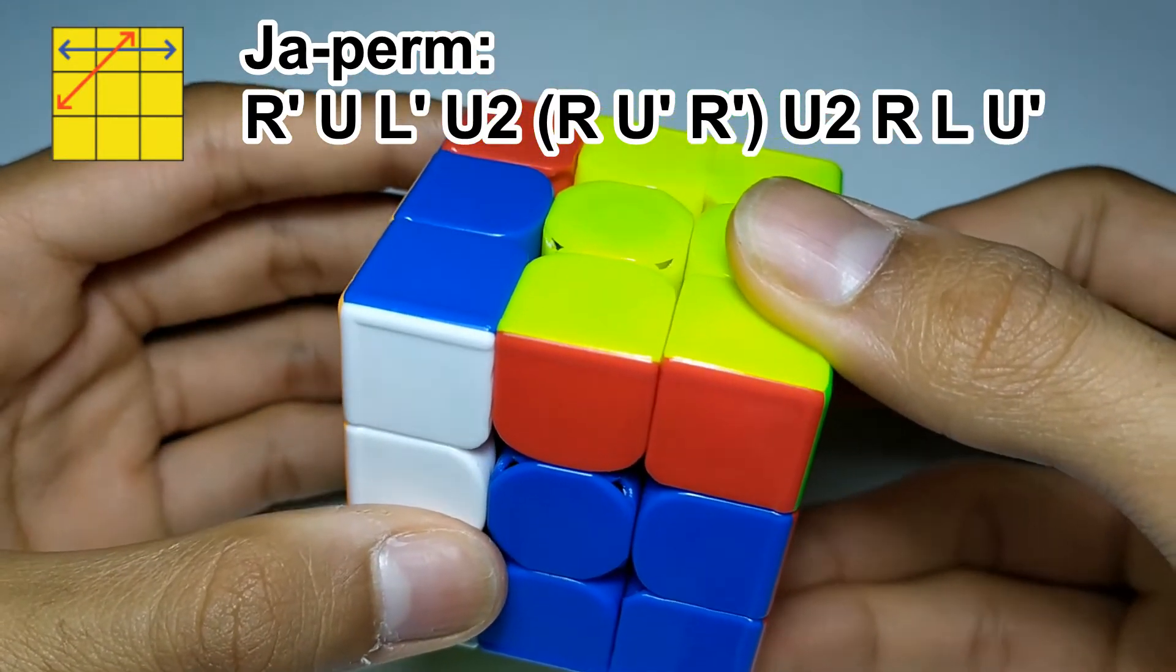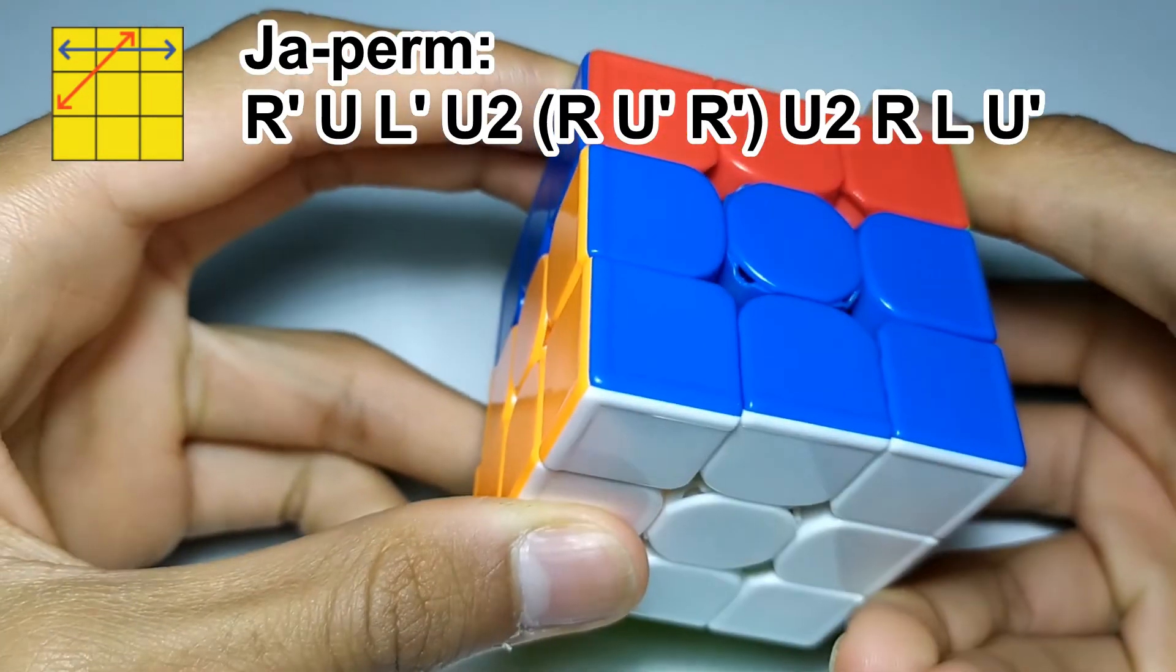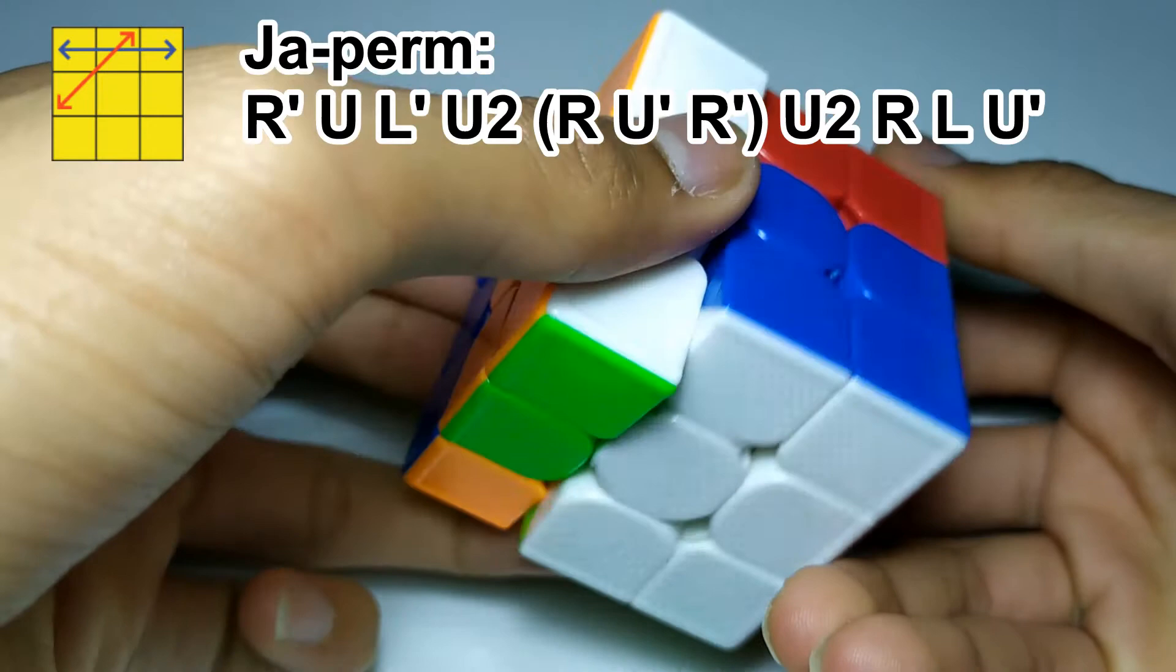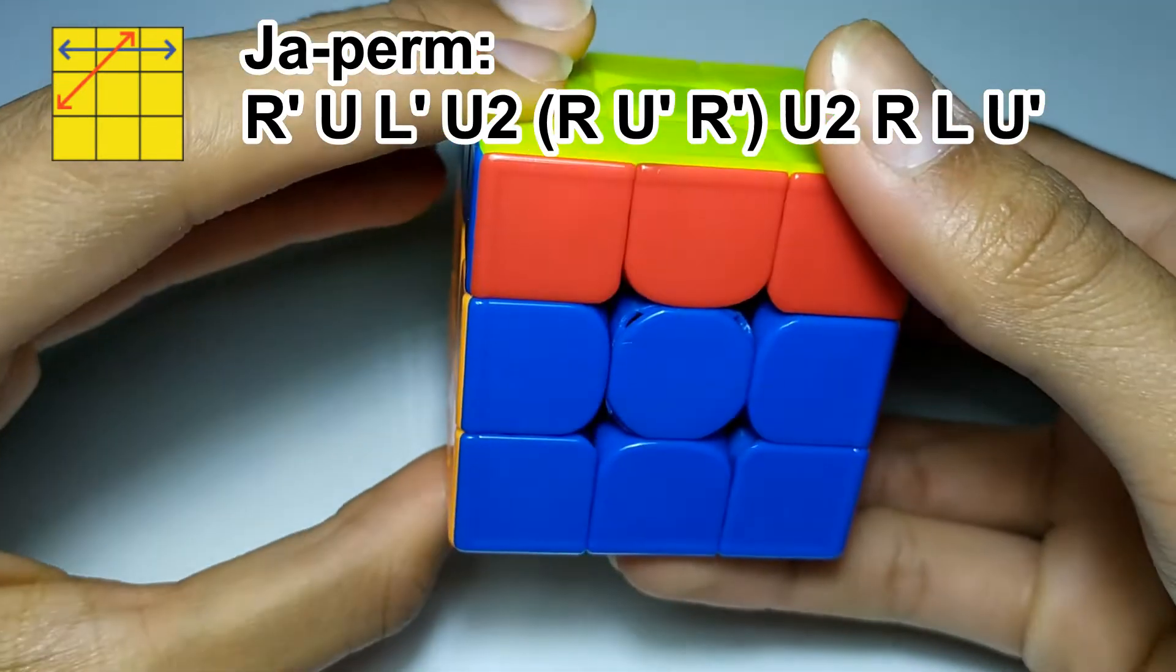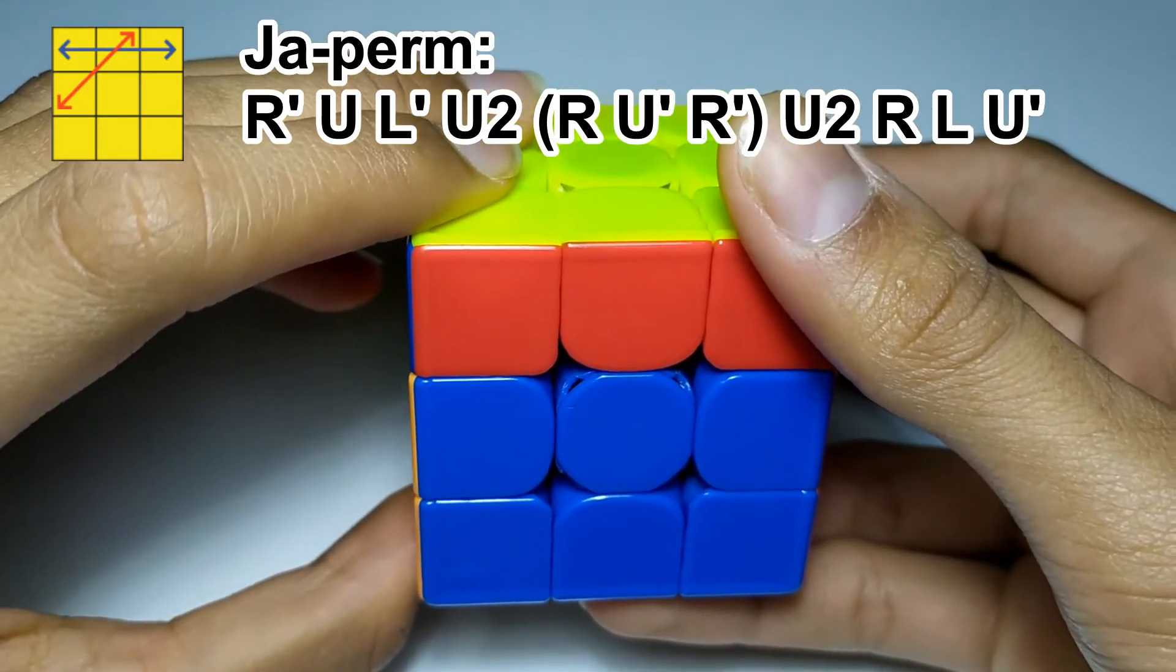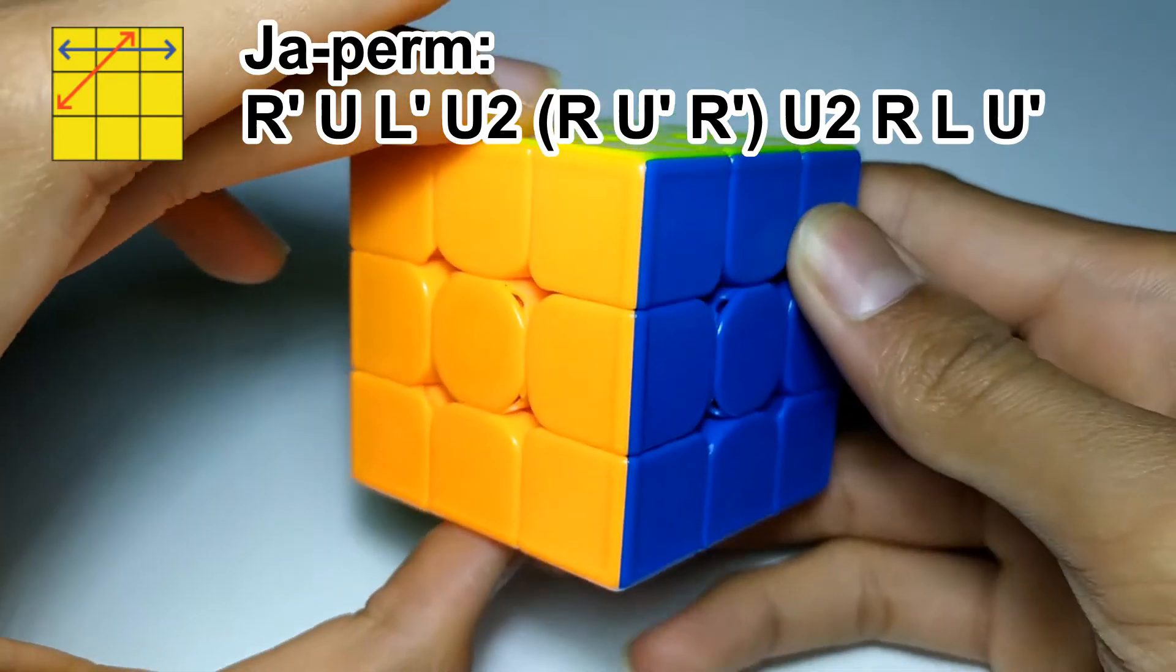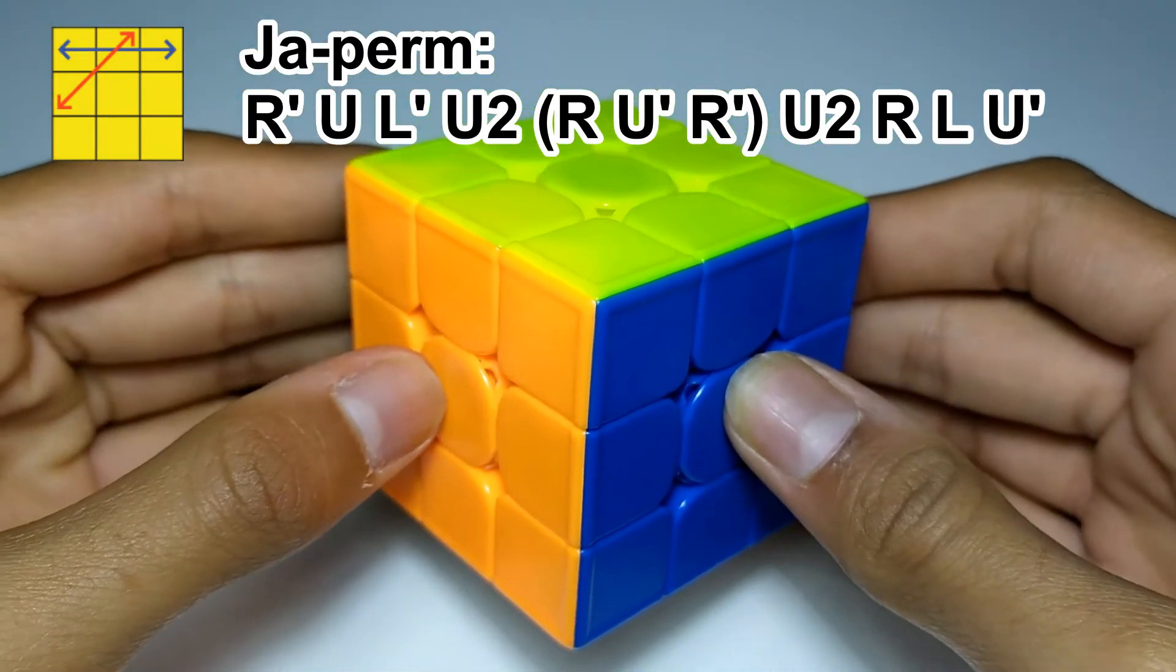R, and then from here I would do either a wide R' as an M move, or I would just do it like that, which is more or less the same, and then I'd do some weird finger-trick as a U. If anyone can find a better way to finger-trick that algorithm, tell me in the comments, please, I want to know.